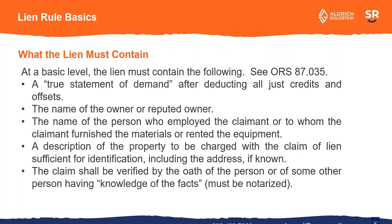The basic level of what the lien must contain: you need to provide a true statement of demand after deducting all credits and offsets. You also have to include the owner, the person that you contracted with, the description of the property — the address if you know it and the legal description if you can get that. Sometimes people will attach a map and circle the property. The claim has to be verified by somebody who has knowledge of the facts — it doesn't need to be somebody who was actually on the ground, it can be somebody that works in the office. It cannot be your attorney or the lien service, as they don't have knowledge of the facts. It also needs to be notarized. Good thing is there are electronic notaries available now, so it's not as much of a pain as it used to be.